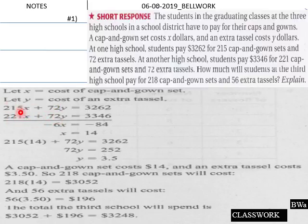We've got 221x with 72y, then 215. And then we combine these two here. We end up with negative 6x equals negative 84. And then we solve for x. And then we stick that back in to the original. So cap and gown set costs $14. Extra tassel costs $3.50. So 218 cap and gowns will cost $3052. And 56 extra tassels will cost this amount here. The total the third school will spend is this amount here. So that would be a complete solution there, students. This is what is expected of you to produce for a word problem like this. Copy this down if you don't have it.